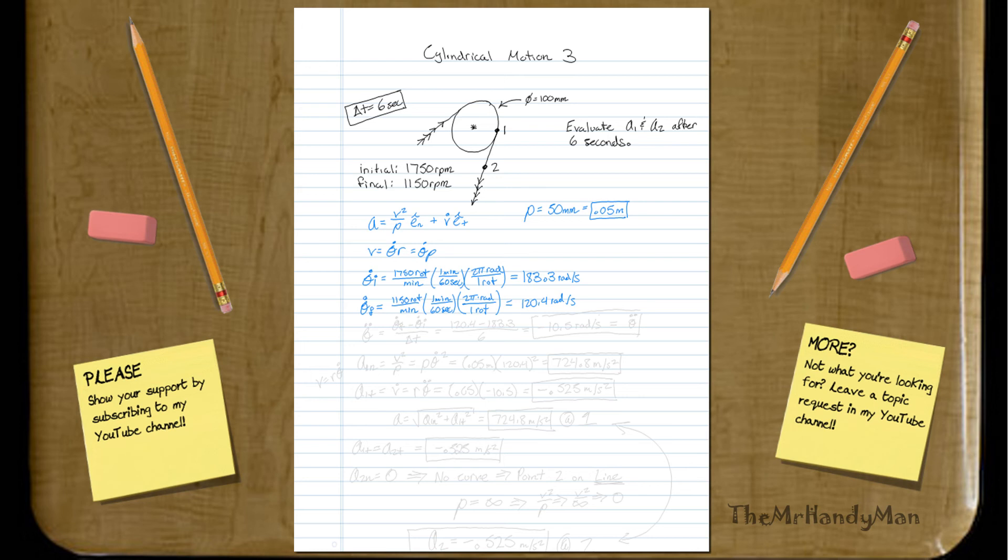So now that we have the initial and the final, we could actually use this. Sorry, I'm going off track a little bit. But we could use this to determine our angular acceleration. So theta double dot, which would equal theta dot f minus theta dot i all over delta t. Well, we already have all that information. That would be 120.4 minus 183.3 all over 6. That's our delta t, which equals negative 10.5 radians a second. So this is actually our theta double dot, which we may find useful later on when we're trying to determine what our acceleration is, we'll just box that and continue.